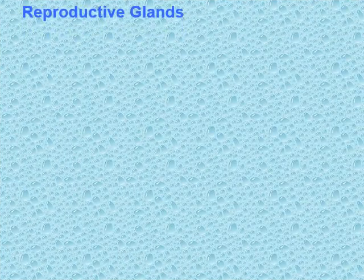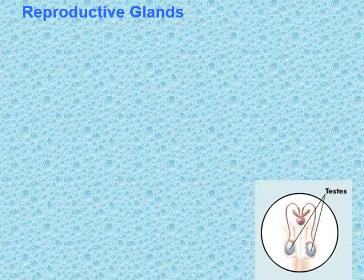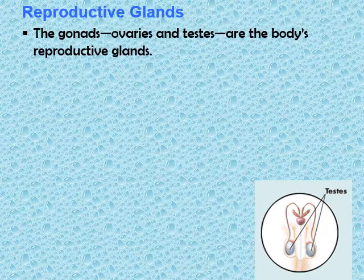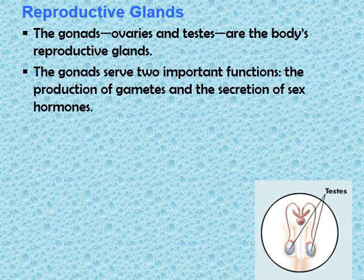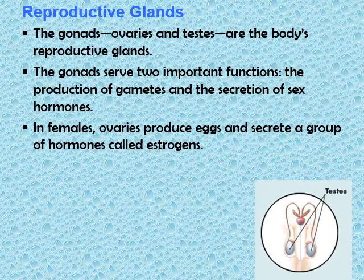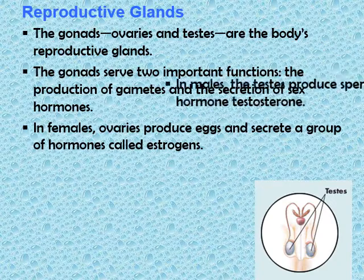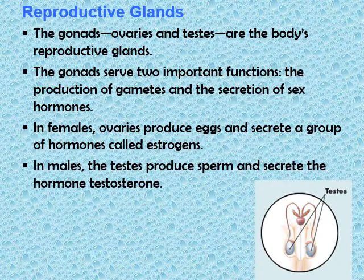The last major endocrine glands are the reproductive glands, also called the gonads — ovaries and testes. The gonads serve two important functions: the production of gametes and the secretion of sex hormones. In females, ovaries produce eggs and secrete a group of hormones called estrogens, while in males, the testes produce sperm and secrete the hormone testosterone.